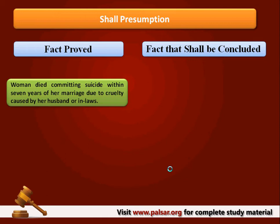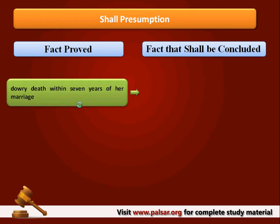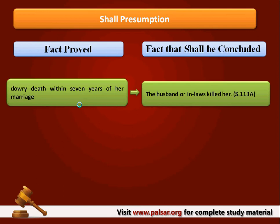Once the following facts are satisfied, the court shall definitely presume those facts and shall shift the burden on the opposite party who disputes the court's conclusion. For example, under Shall Presumption, if there is a dowry death and she died within seven years of her marriage, the court shall presume that the death is due to the husband or her in-laws. The burden rests upon the accused to dispute the conclusion. If they fail to discharge it, they will face conviction.